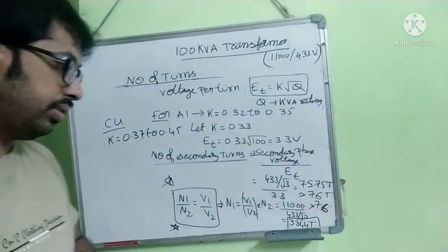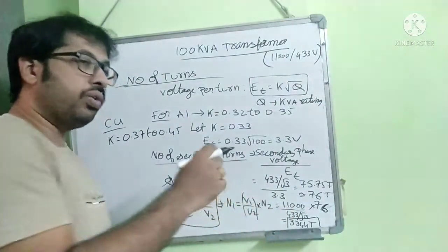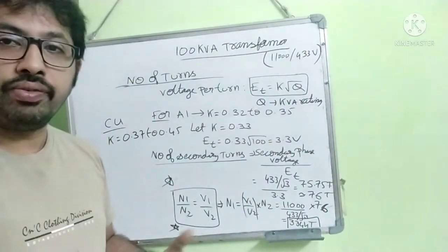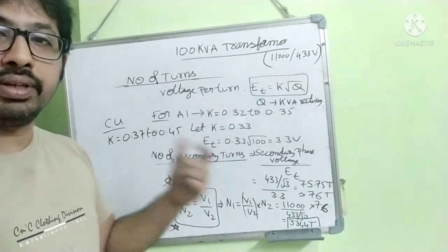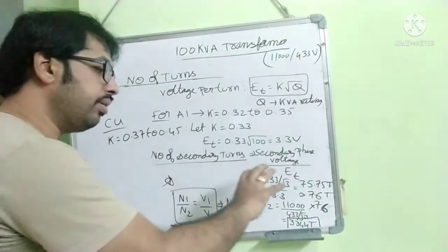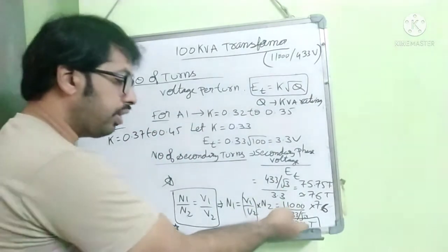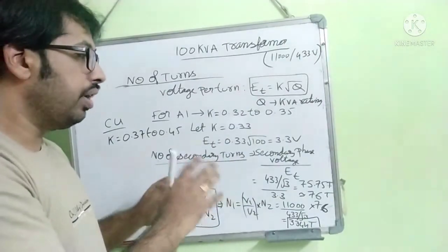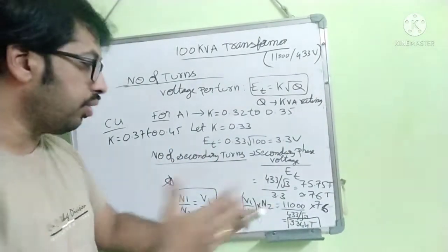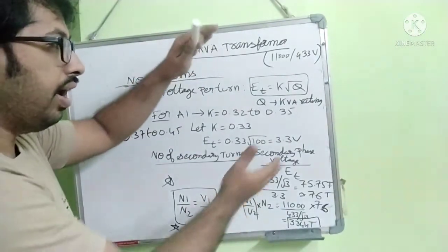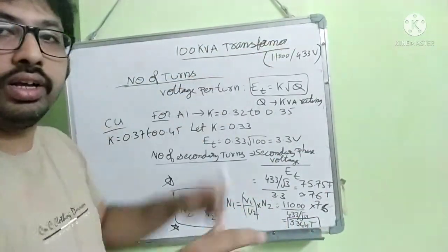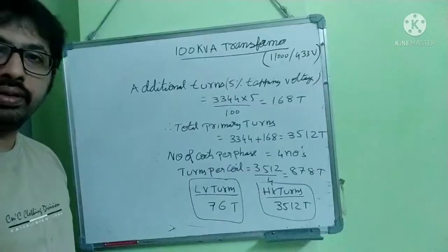Now we have to take care of the tappings also. We are given specification with tappings. So we have to calculate some more turns for this. We will try to calculate the tapping turns, and totally how many turns HV required, and totally how much LV winding is required.